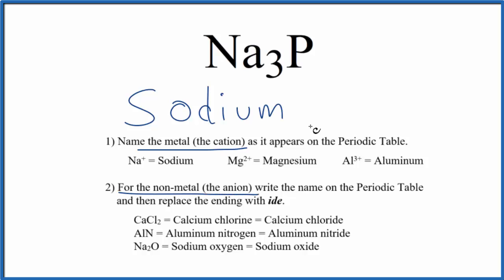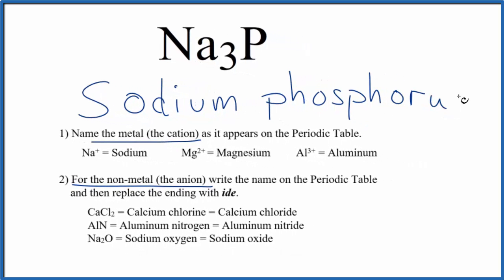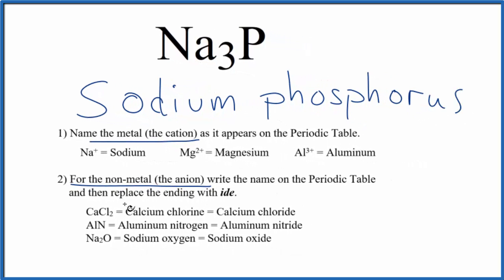Then we write the name for the non-metal. That's the phosphorus, small P. Once we've done that, we'll replace the ending with IDE. So we get rid of the O-R-U-S and replace that with IDE.